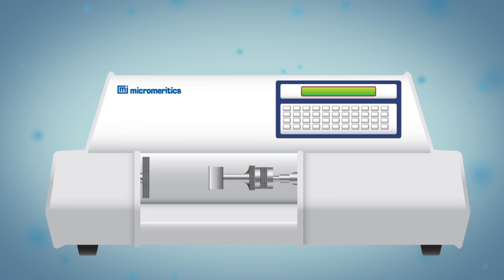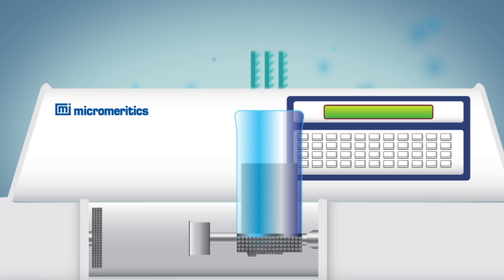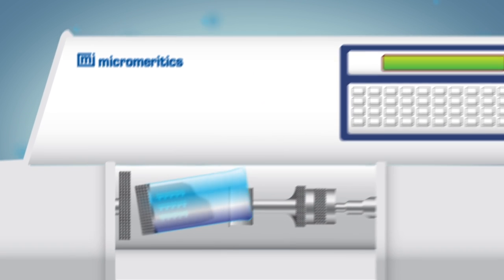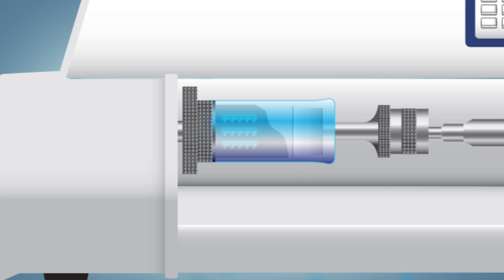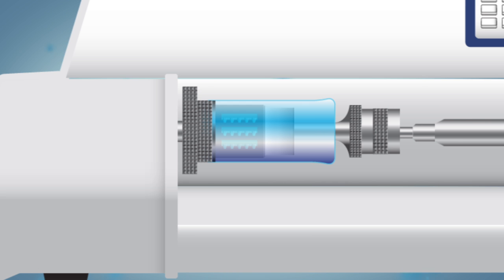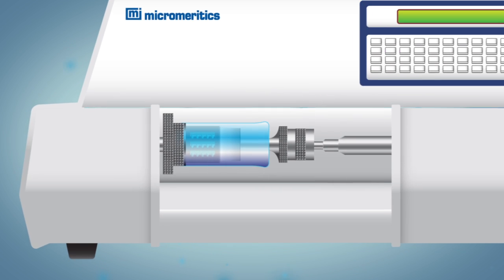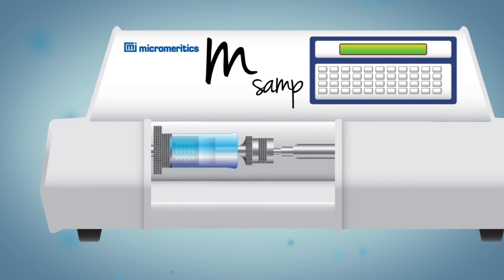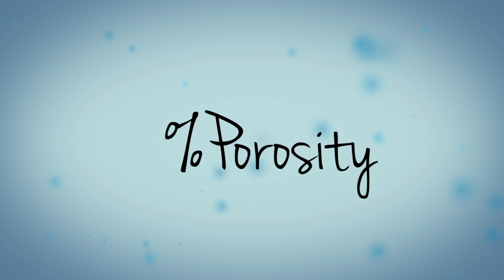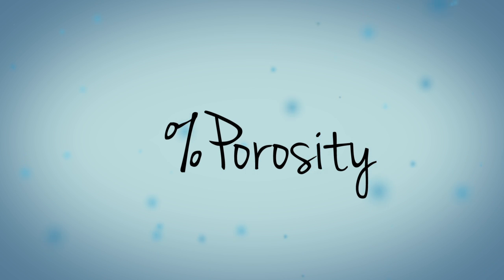The GeoPyc is used to measure envelope density. A ribbon is placed into a quasi-fluid medium that has a high degree of flowability. The ribbon and medium are then gently agitated, compressed, and displacement measurements are taken. When skeletal density measurements are entered into the GeoPyc, along with sample mass, the percent porosity of the ribbon is then calculated.